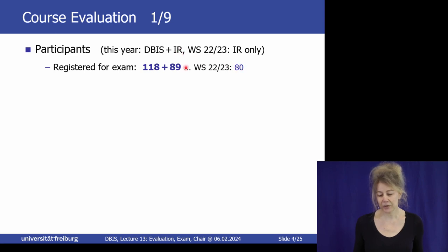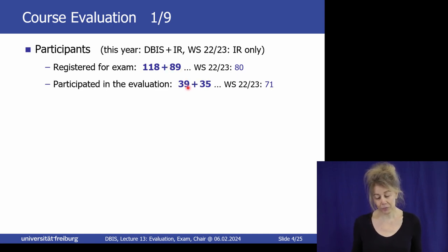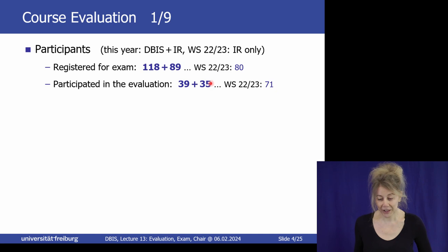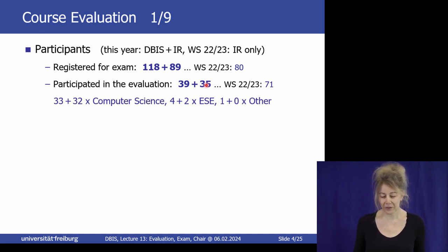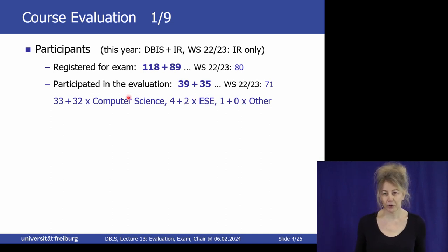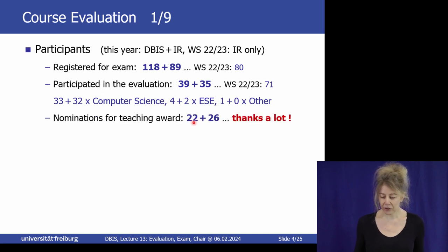Exercise sheets were voluntary this year; in the past they were mandatory and you'd receive points for participating in the evaluation — then usually 90% participated. This is what happens when it's voluntary: about 70 of 200 participated, roughly one third. One third is still representative feedback. Mostly computer science students; no math students this semester. Nominations for the teaching award — also a fair number — thank you very much, that's 48.